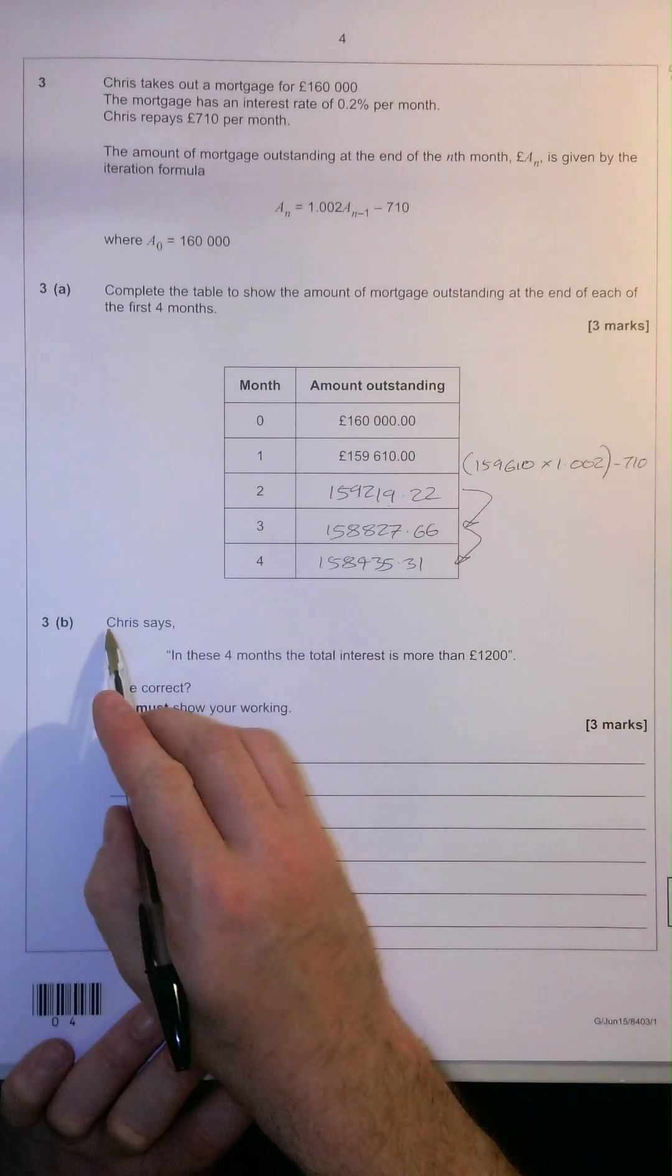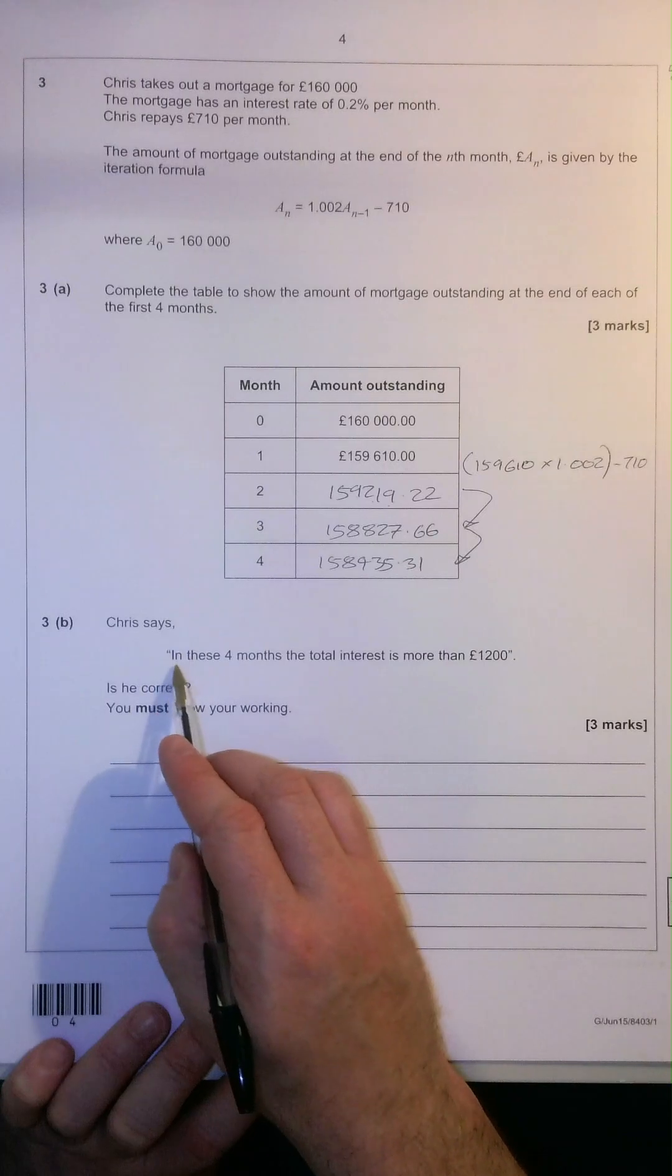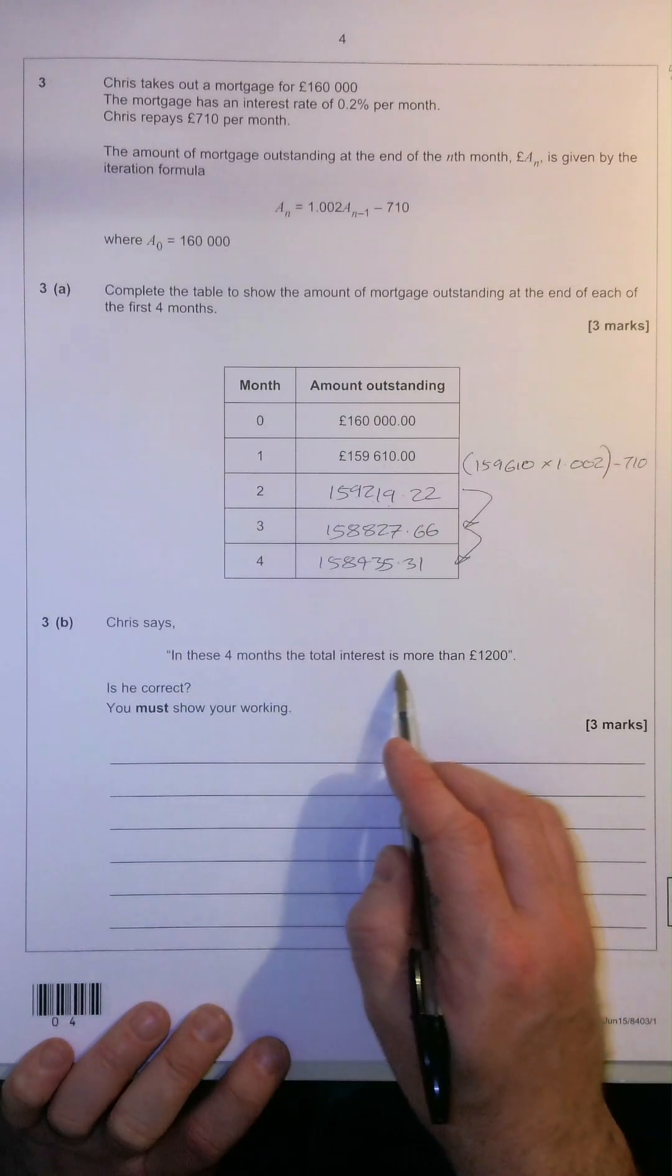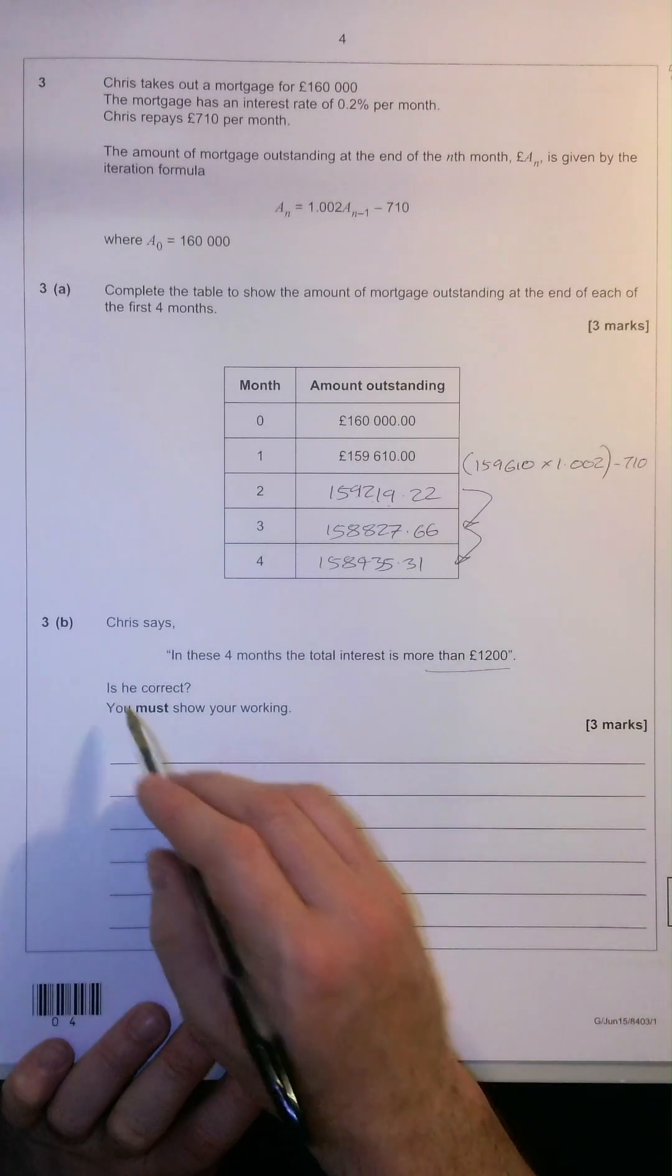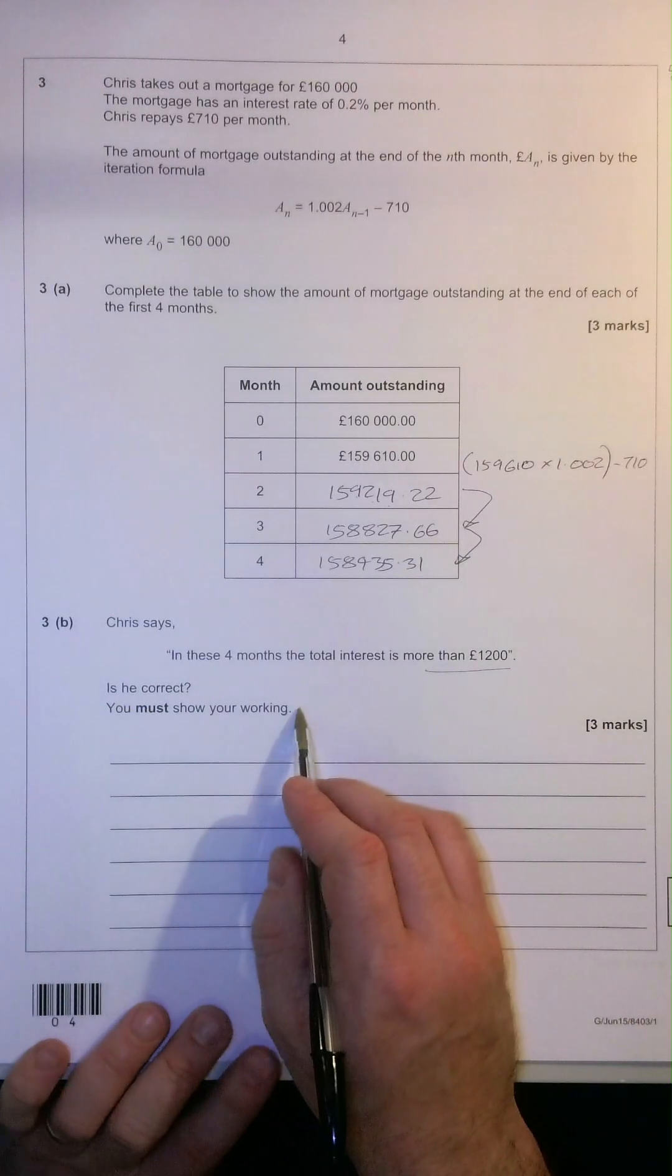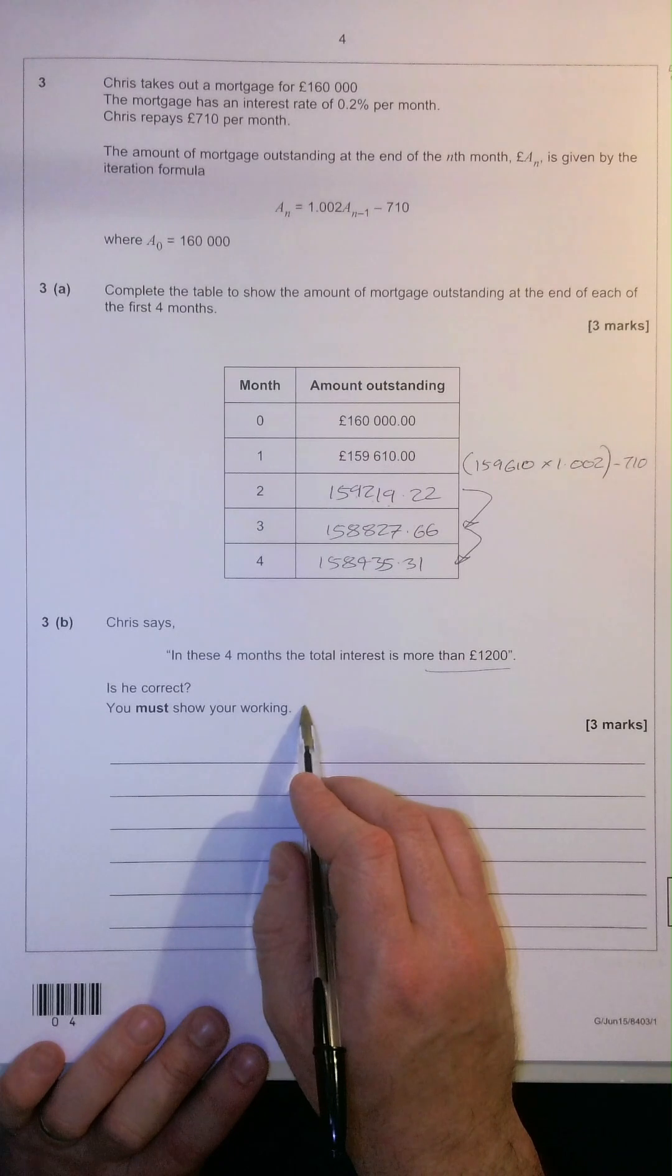The second part of the question, Chris says in these four months, the total interest is more than £1,200. Is he correct? We must show our working. How would we approach a question such as this?